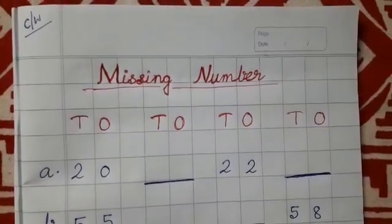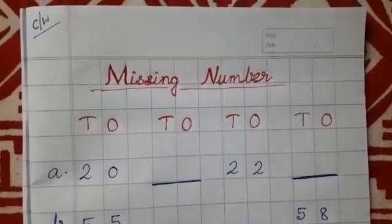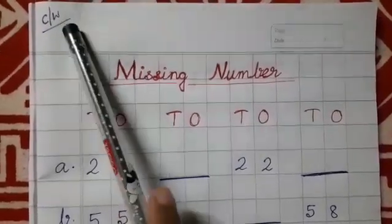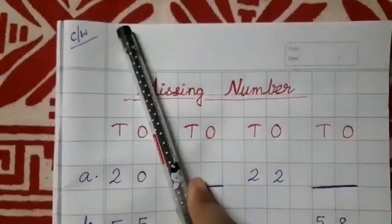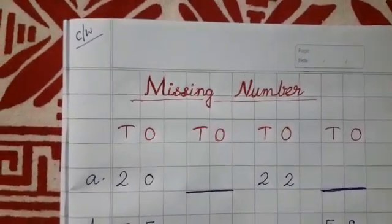Now you have already learned and done the activity about missing number. Today we are going to write it in our copy and do some more sums. See in the left top side, here we have written CW. You will write the date under this.